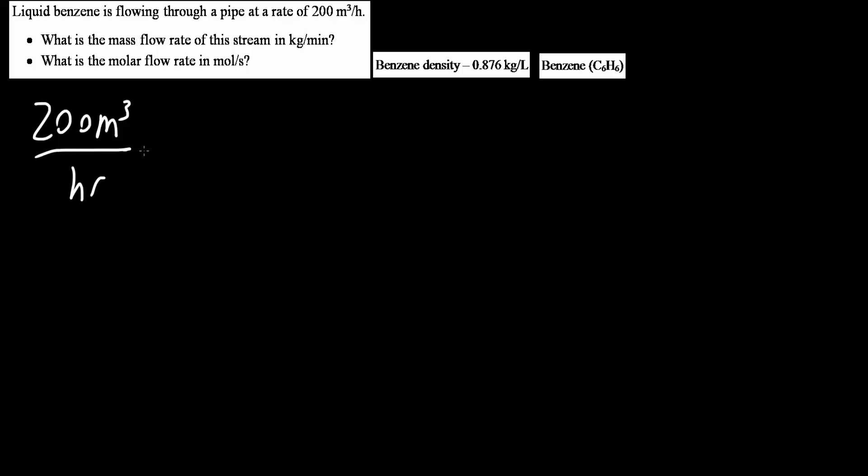One thing we can do is convert cubic meters into liters. We can do this by saying that one cubic meter is 1000 liters.